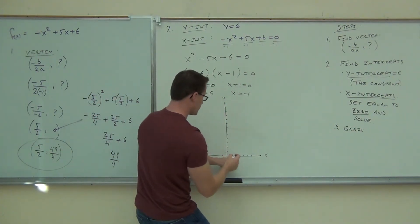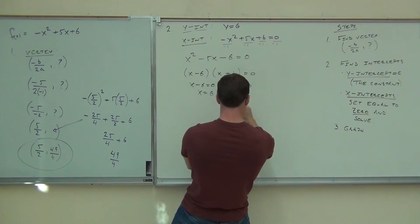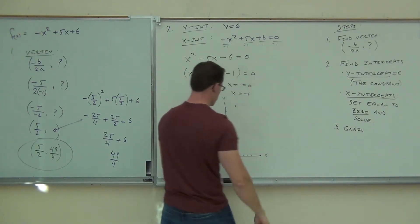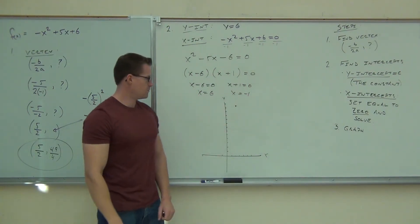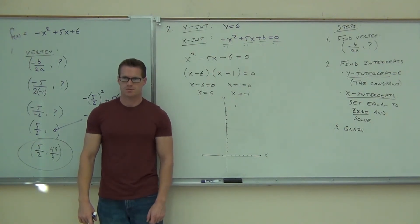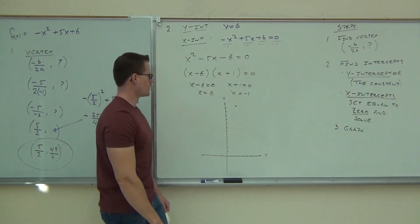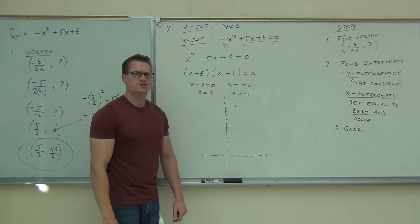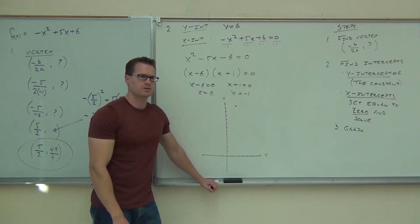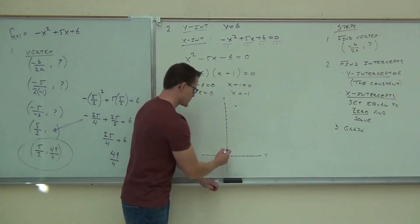So two and a half, twelve and a quarter. That's way up there. You okay with where the vertex is? Pretty close. Two and a half, twelve and a quarter. Fix numbers if you want. Do your y-intercept now. Where's your y-intercept? Six. Six is up here.